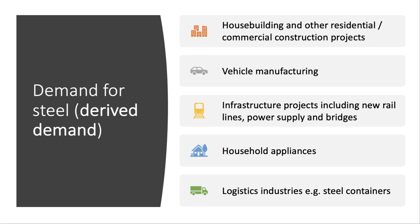Classic examples of derived demand for steel include house building — residential and commercial construction projects. Steel is used in vehicle manufacturing, in infrastructure projects such as new transport links, power supply, and bridges. Steel is used in millions of household appliances and, crucially as part of globalisation, in steel containers used by the logistics industry. So steel has a very strong derived demand, and global demand for steel is sensitive to the world economic cycle.